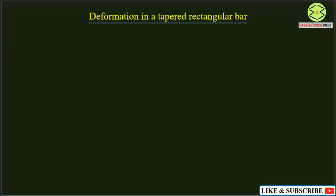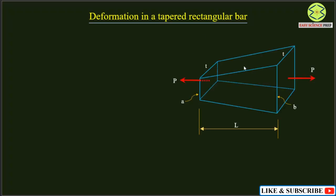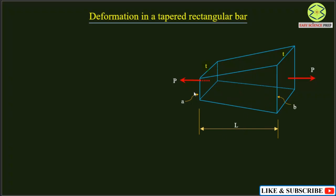In today's session we would like to find out the deformation in a tapered rectangular bar. The tapered rectangular bar has uniform thickness t throughout, but the height of the bar increases from a to b. The left face has a rectangular area with height a and thickness t, and the right face has height b and thickness t. This bar has length l and is being pulled by an axial tensile force p. We want to find the deformation due to this tensile load p.